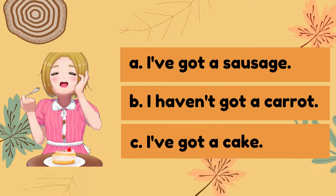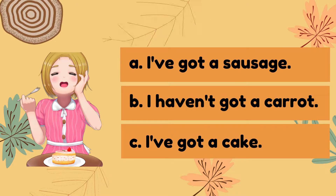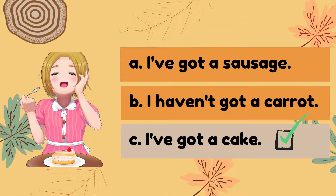Okay, next — look at the picture and what do we say? A: I've got a sausage. B: I haven't got a carrot. Or C: I've got a cake. Do you know the answer? Yes, the answer is C — I've got a cake.